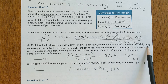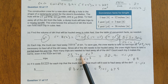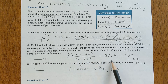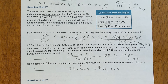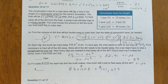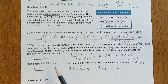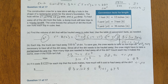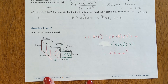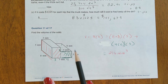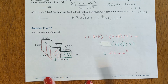Each truck can carry a certain number of cubic feet, and we have 25,704 cubic feet total. Dividing gives 82.91 trips, so you round up to 83 trips because all the dirt needs to be removed. Making 83 trips at 1,225 dollars each gives the total cost.